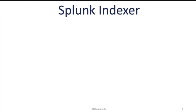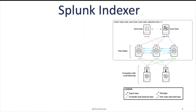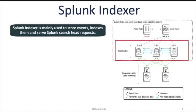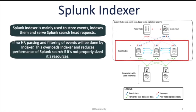Splunk Indexer is another role of Splunk Enterprise package. This example Splunk architecture diagram shows an architecture set up with a cluster master, search head, three indexers, and two forwarders. Peer nodes highlighted in the red color box are nothing but indexers. Splunk Indexer is mainly used to store events, index them, and serve requests of the Splunk search head. If there is no HF, parsing and filtering of events will be done by the indexer. This is the main reason Splunk Heavy Forwarder is optional, but having no HF will overload the indexer and reduce the performance of Splunk search if it is not properly sized for CPU and memory.